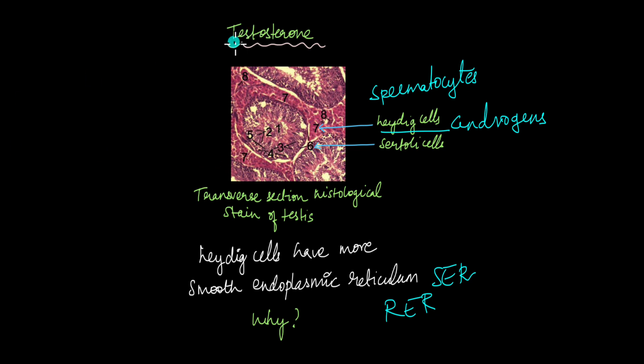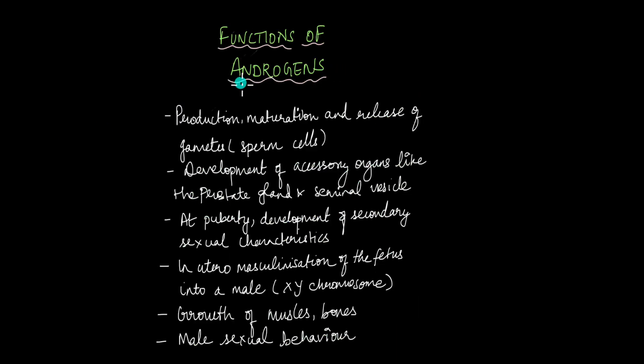So what does testosterone do in the male body? So like I said, testosterone and androgens are not secreted only at the onset of puberty. They are secreted in low quantities from birth. In fact, for the in utero masculinization of the fetus, for the development of male characteristics in the fetus itself, the presence of androgens is needed in the fetus.